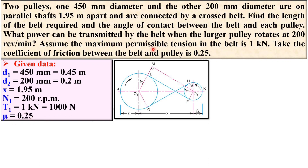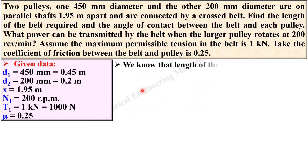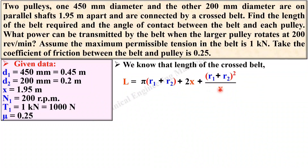Here, maximum permissible tension is taken as T1 because there is no description about centrifugal tension. If centrifugal tension is given, then T_max = T1 + Tc. You know the length of cross belt formula — remember this equation — where r1 is the radius of the larger pulley, r2 is the radius of the smaller pulley, and x is the distance between the two pulleys.